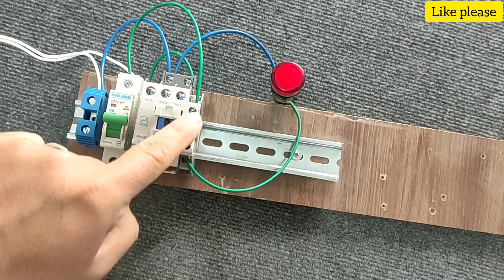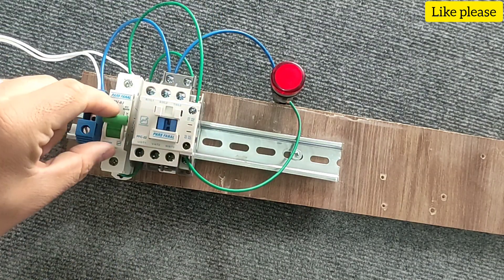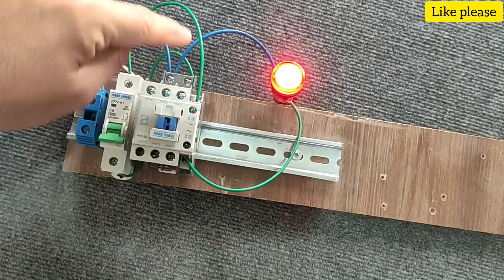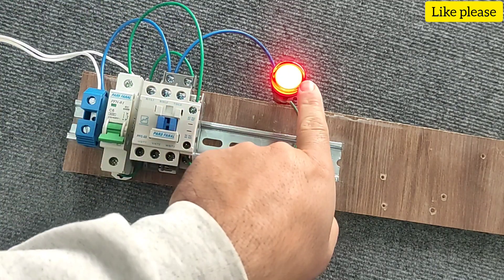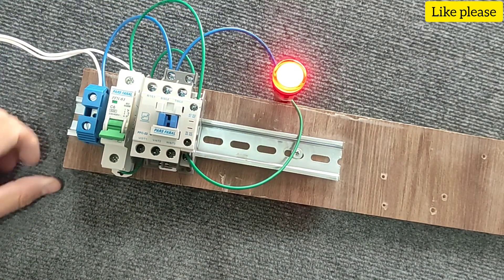Now, when the switch is cut off, the conductor is also cut off, and the normal closed blade allows the current to pass and turn on the indicator light.